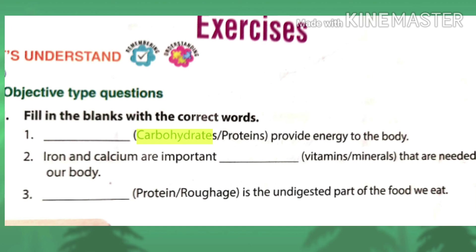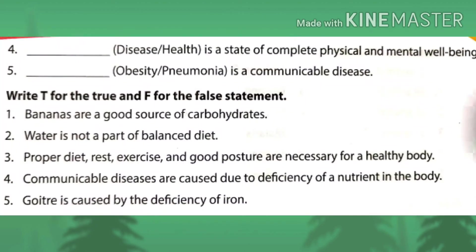Second blank: iron and calcium are important nutrients needed by our body. As we have discussed, iron, calcium, iodine, phosphorus, etc. are important minerals, so the answer is minerals. Third blank: this is the undigested part of food we eat — the answer is roughage.